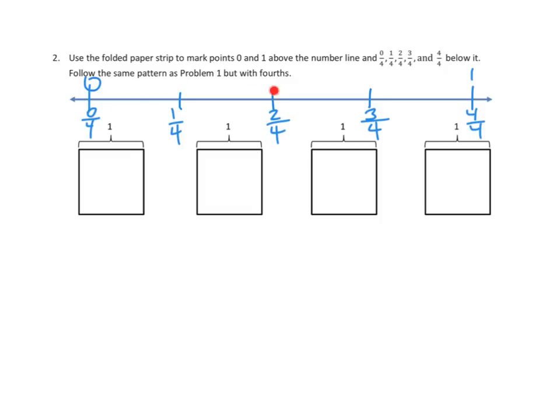This is 1 fourth of a whole. This is 2 fourths of a whole. This is 3 fourths of a whole. And this is 1, 2, 3, 4 fourths of a whole. 4 fourths are a whole. That makes sense, because 4 divided by 4 is 1.